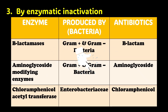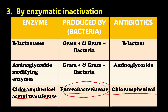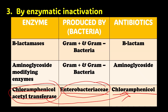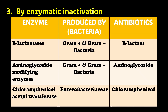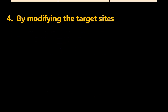The third example is chloramphenicol acetyltransferase, produced specifically by members of the Enterobacteriaceae family such as E. coli. This enzyme destroys the structure of the chloramphenicol antibiotic, thereby inactivating it. That covers the third mechanism — enzymatic inactivation.